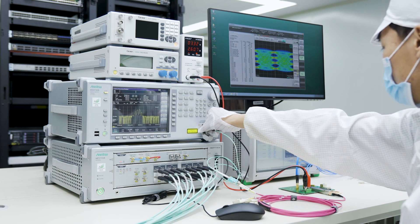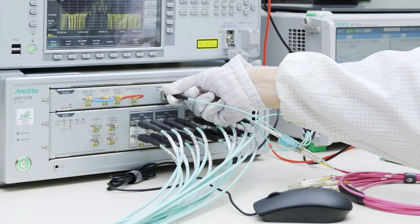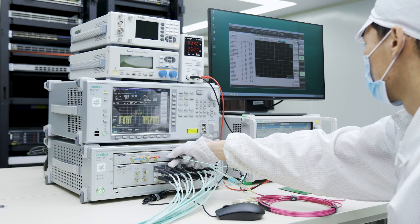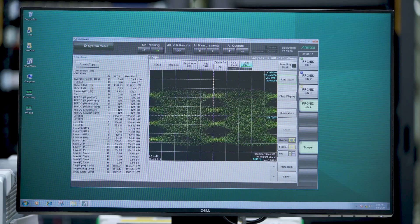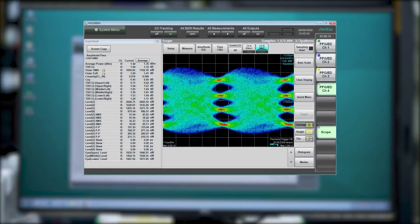For eye diagram test, the main test indicators are eye height and width. By checking them in the test result, users can tell if the signal linearity quality of the 400 gigabit transceiver is good or not.